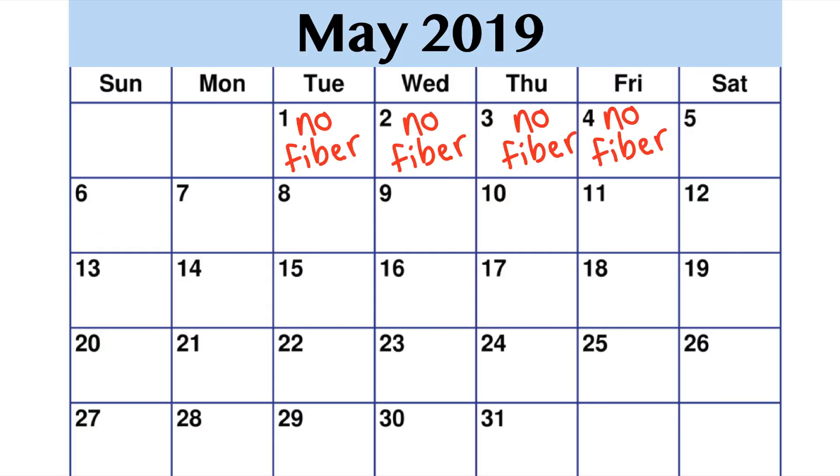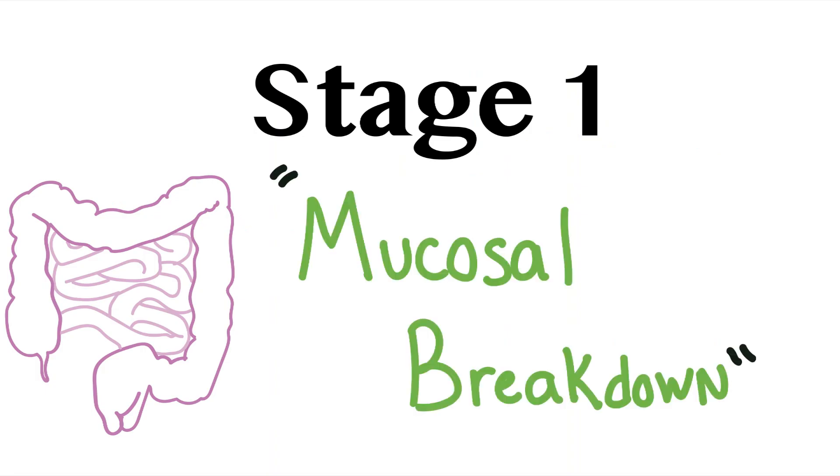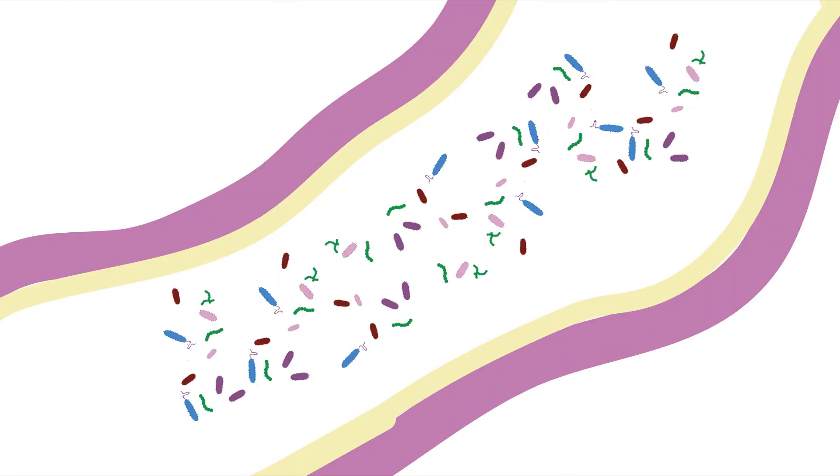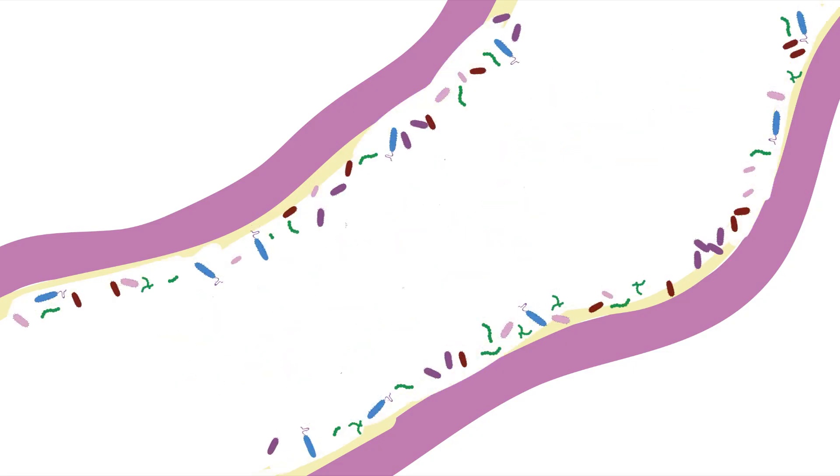Here's what happens when you don't eat fiber for an extended period of time. Stage 1, mucosal breakdown. The gut bacteria have no external food source to live on. In order to survive, they break down the mucosal lining of your colon, as the mucus is made of glycoproteins which contains carbohydrates.